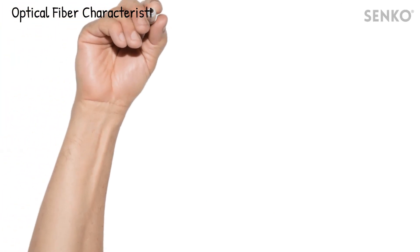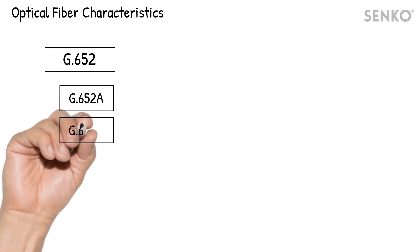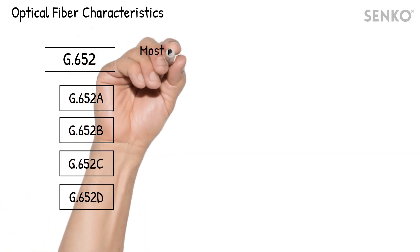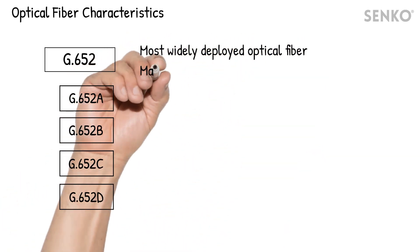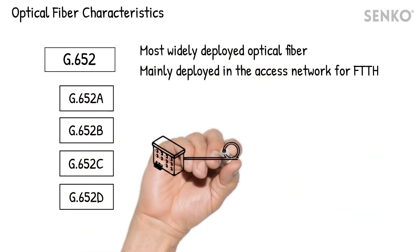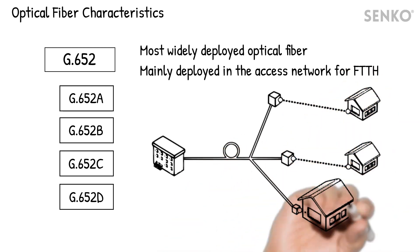G.652 outlines the characteristics of the most widely deployed single-mode fiber type in the world, with G.652D being the latest standard that integrates all the advantages of its previous standards. It is the introduction of G.652D that makes fiber to the home, or FTTH, possible.